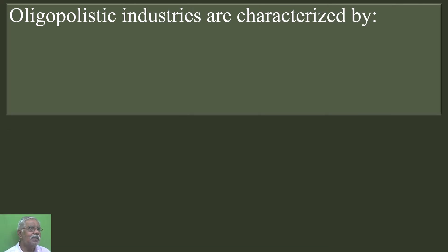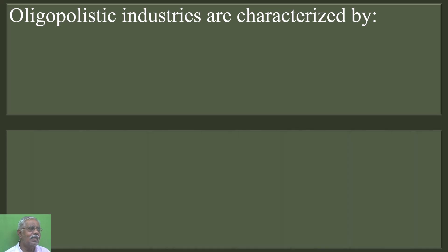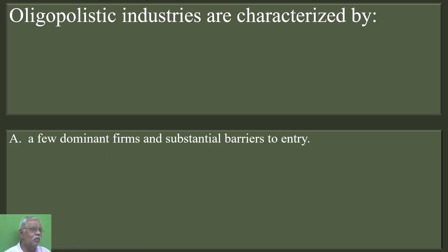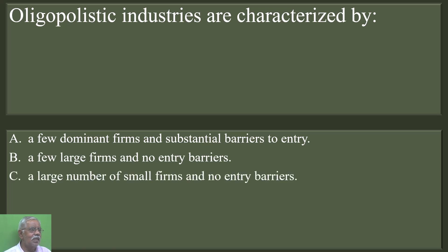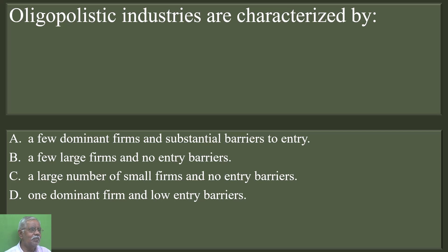Oligopolistic industries are characterized by: a few dominant firms and substantial barriers to entry; a few large firms and no entry barriers; a large number of small firms and no entry barriers; or one dominant firm and low entry barriers. Option A is correct: a few dominant firms and substantial barriers to entry.